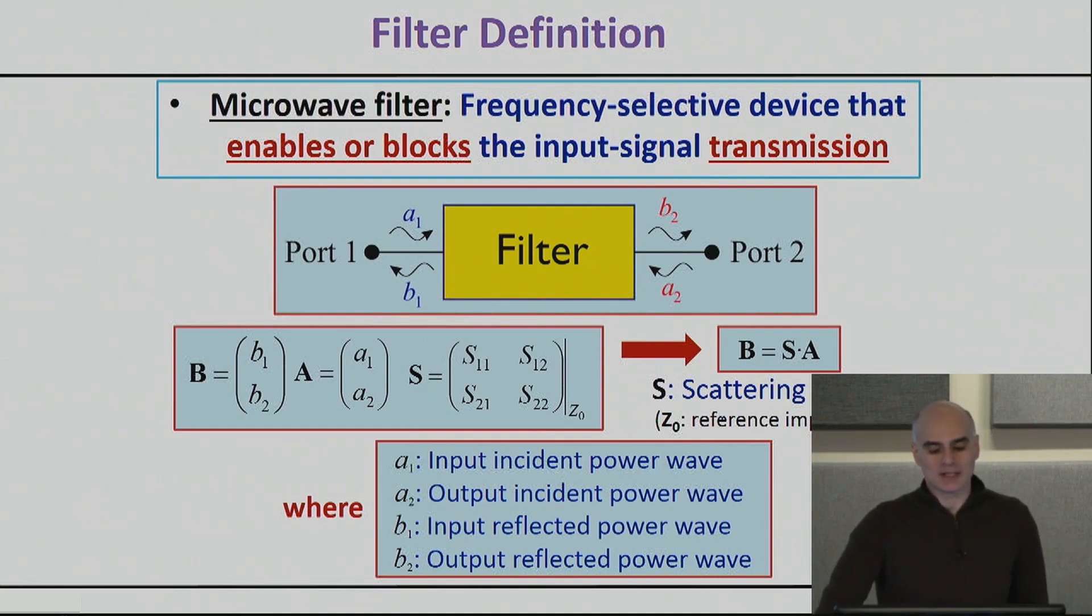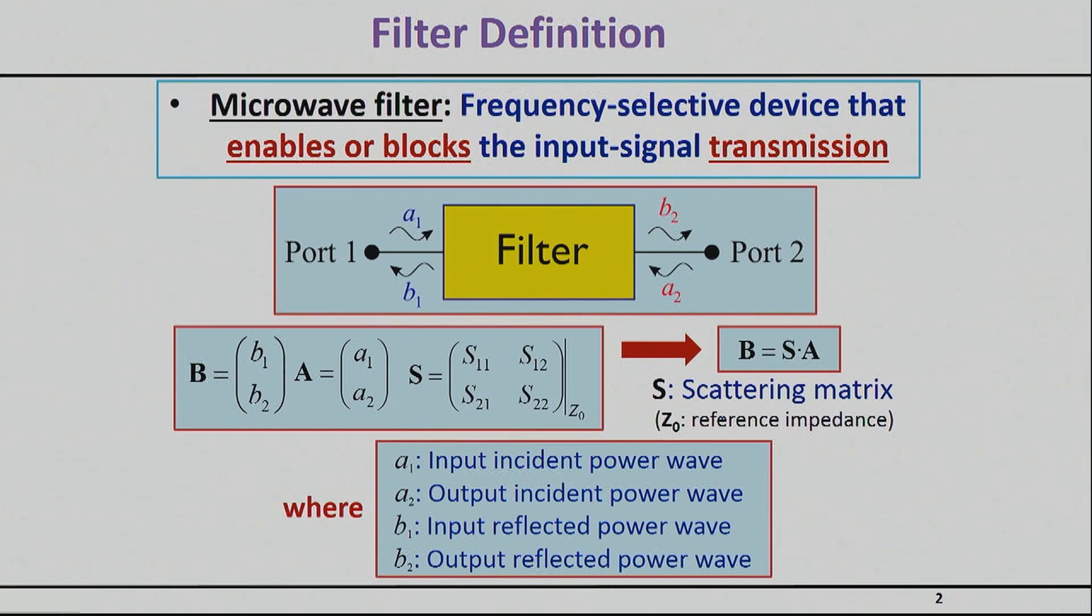We're going to basically synthesize the filters based on the scattering parameters that we have learned in the first course of that series. That's not to say that's the only way to synthesize a filter, but that is by far the most common way, and that's the way that basically gives you most of the tools, including the coupling matrix tool that we will be using here. So anytime you see a scattering parameter in this design, it's basically the ones we have discussed before.